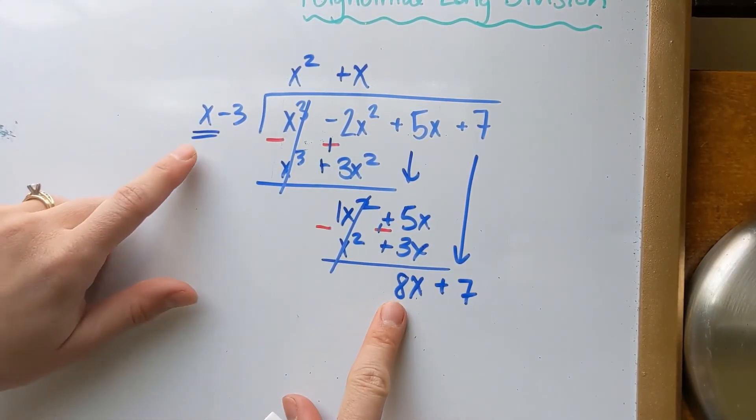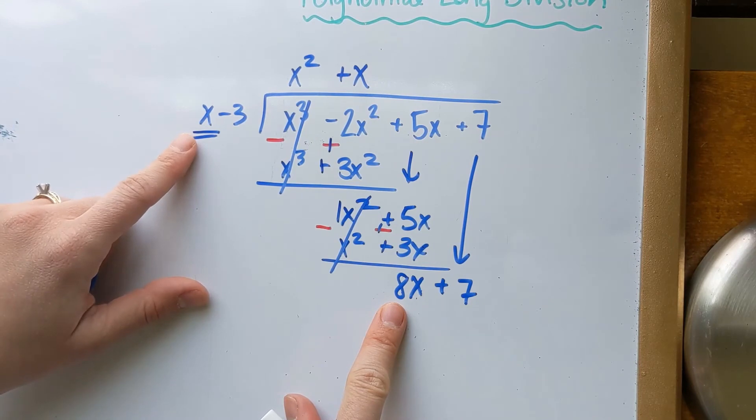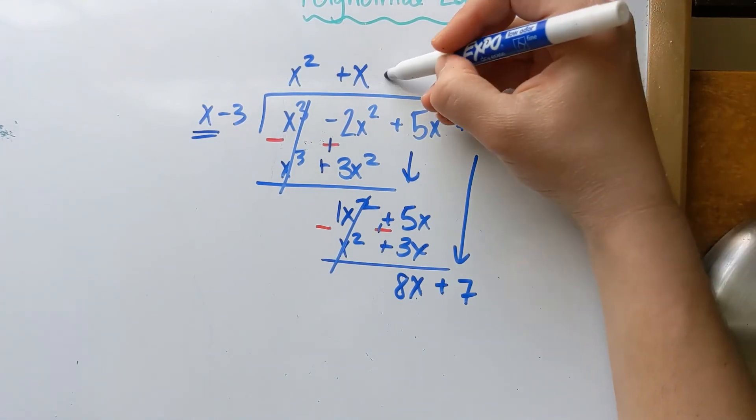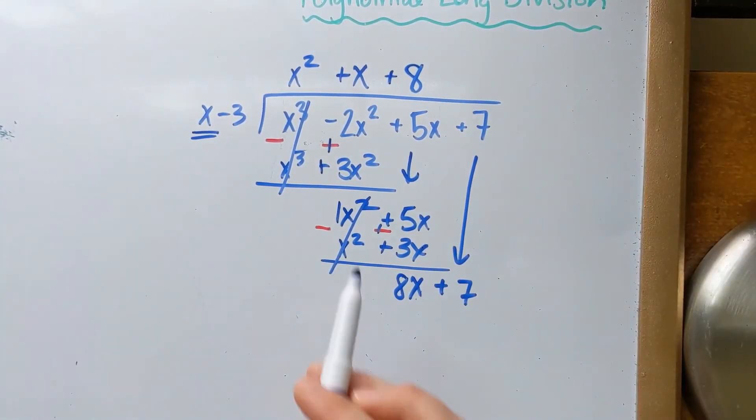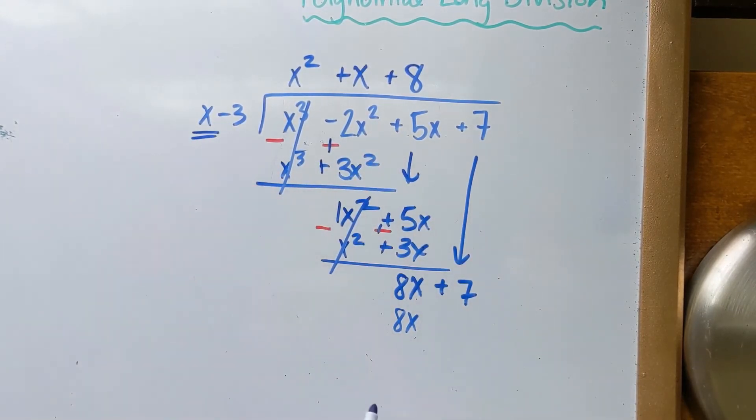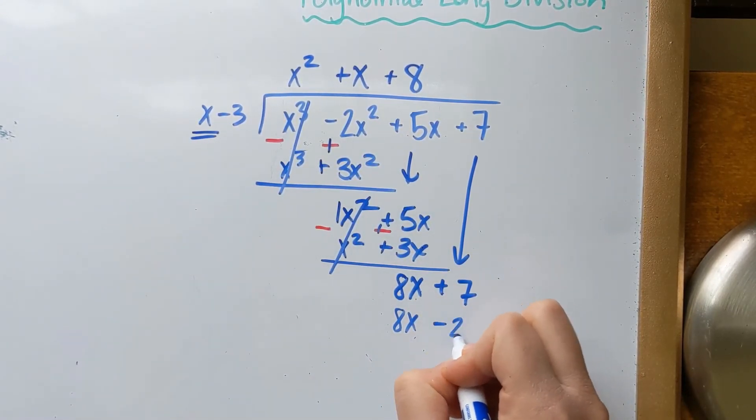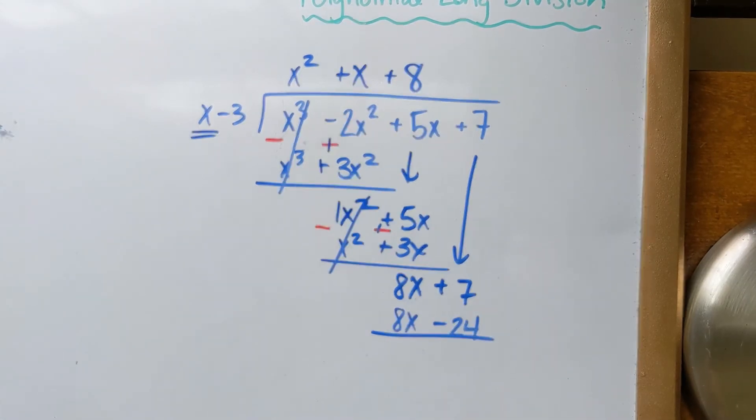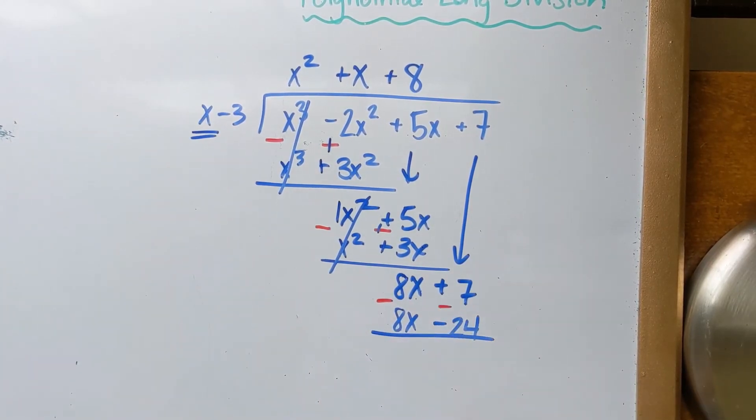Okay, again, look at these first terms. What do I multiply x by in order to obtain 8x? I just multiply by 8. So I'm going to put a positive 8 up here. 8 times x is 8x. 8 times negative 3 is negative 24. Alrighty. Subtract, subtract. And then I have, let's see, 0 there. 7 plus positive 24, which is 31.